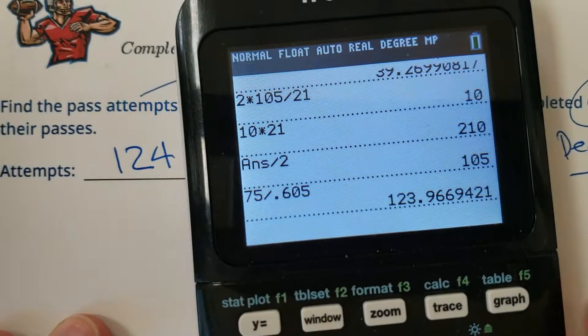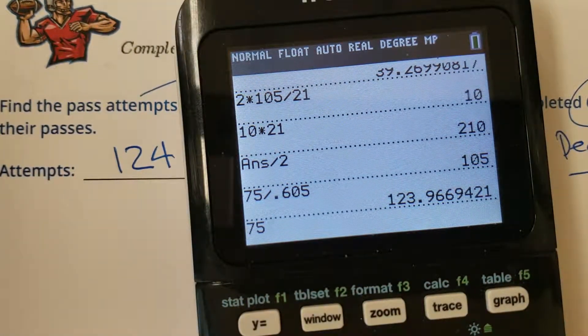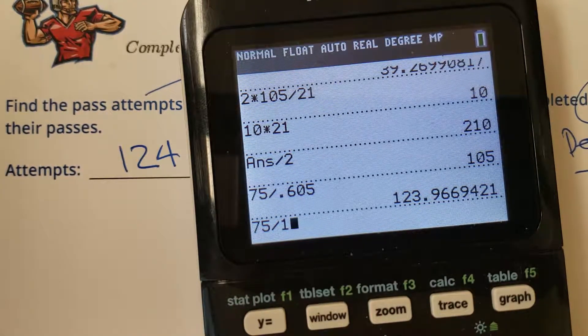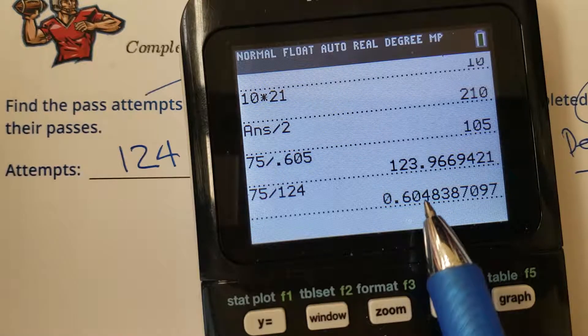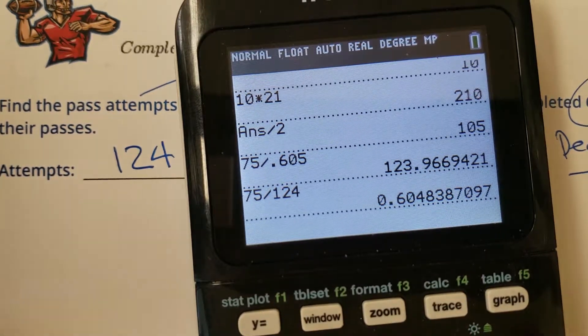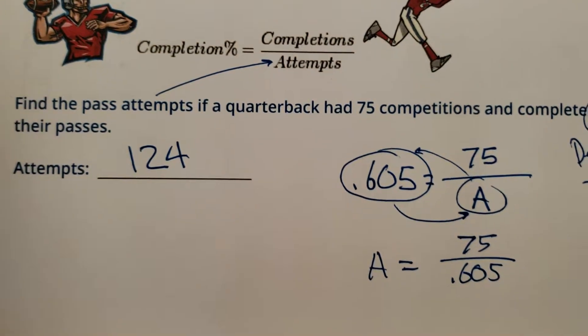Let's double check. 75 completions out of 124 attempts. Look at that. 0.604. Round it up to five. There we go. So 124 attempts.